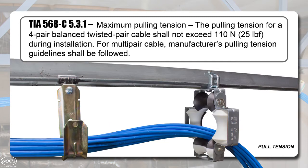The maximum pull tension should not exceed 25 pounds during installation to prevent damage to the cable. It is also best to use a cable pulley when pulling cable through tight bends.